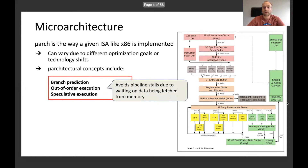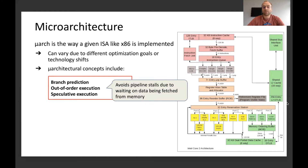Out-of-order execution is basically there to avoid stalling the pipeline inside the CPU. For example, it could be stalled because of loads from main memory. And with out-of-order execution, you could reorder instructions to keep the pipeline populated in the meantime.